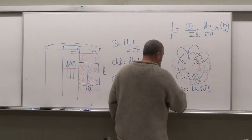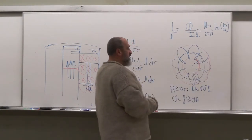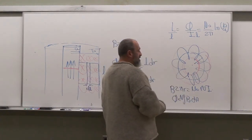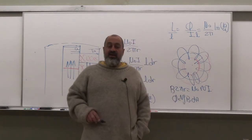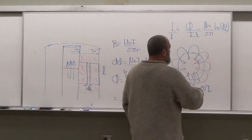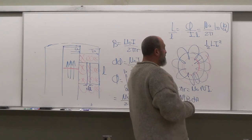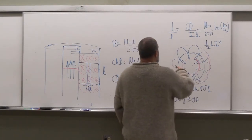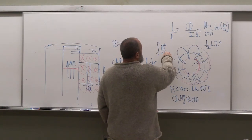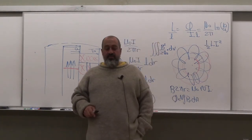The total flux linkage is Φ_total = N · ∫B · dA, and inductance L = Φ_total / I. For the energy stored, you can use either U = ½LI² or integrate the energy density: U = ∫(B² / 2μ₀) dV over the volume of the toroid.